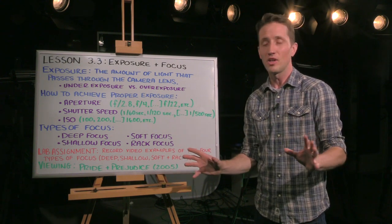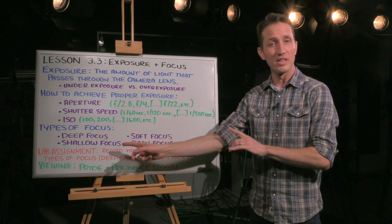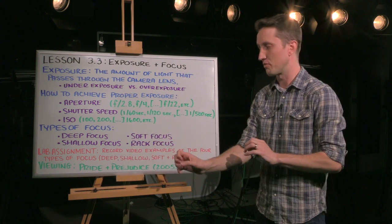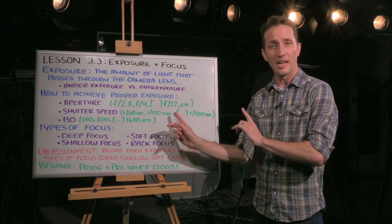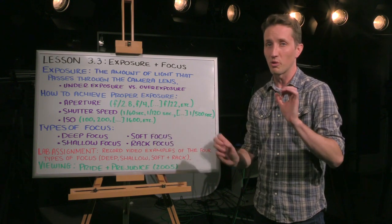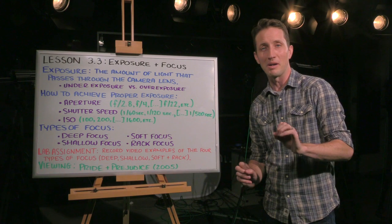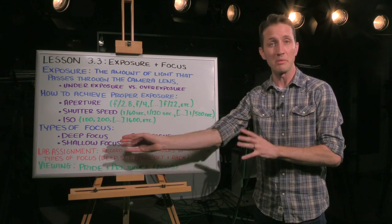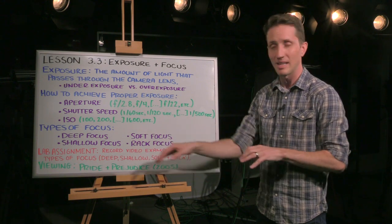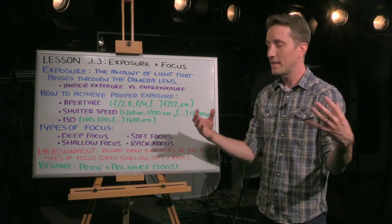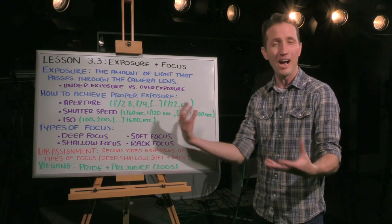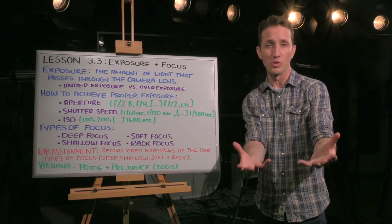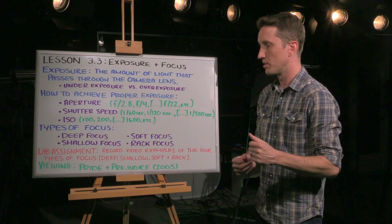And with that, you can achieve some really great shallow depth of field shots, which we're going to talk about in a few minutes. And with a very high aperture, where you're only allowing a very small amount of light into the lens, you can get some really cool deep focus shots. With aperture, it's just how much light you're letting pass through the lens into the camera.